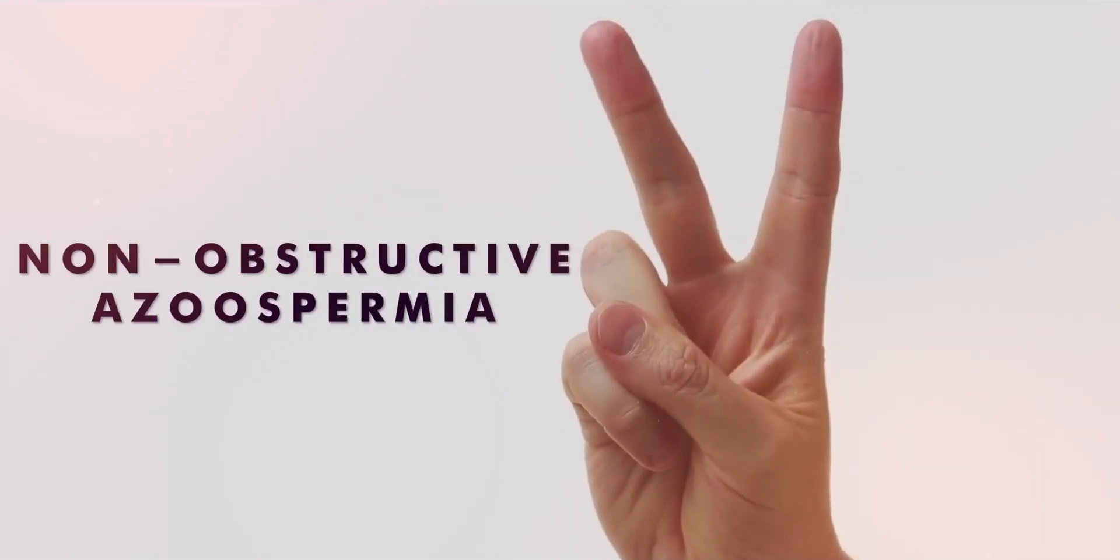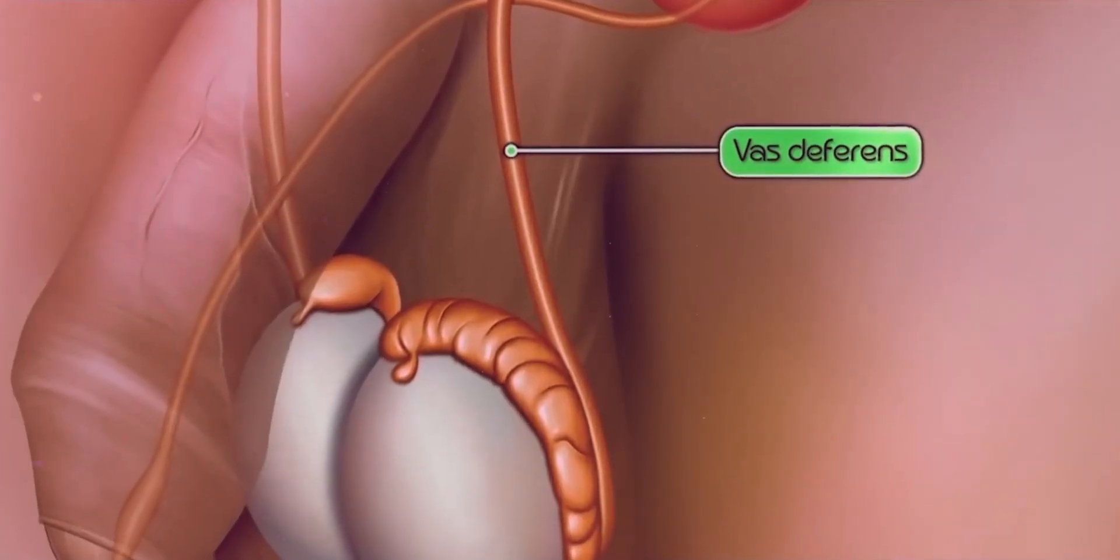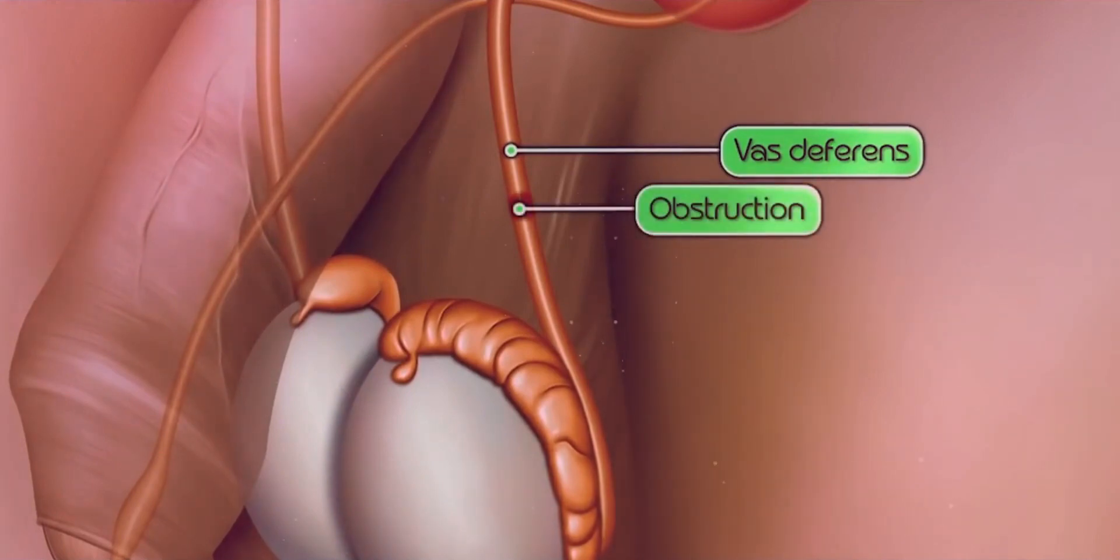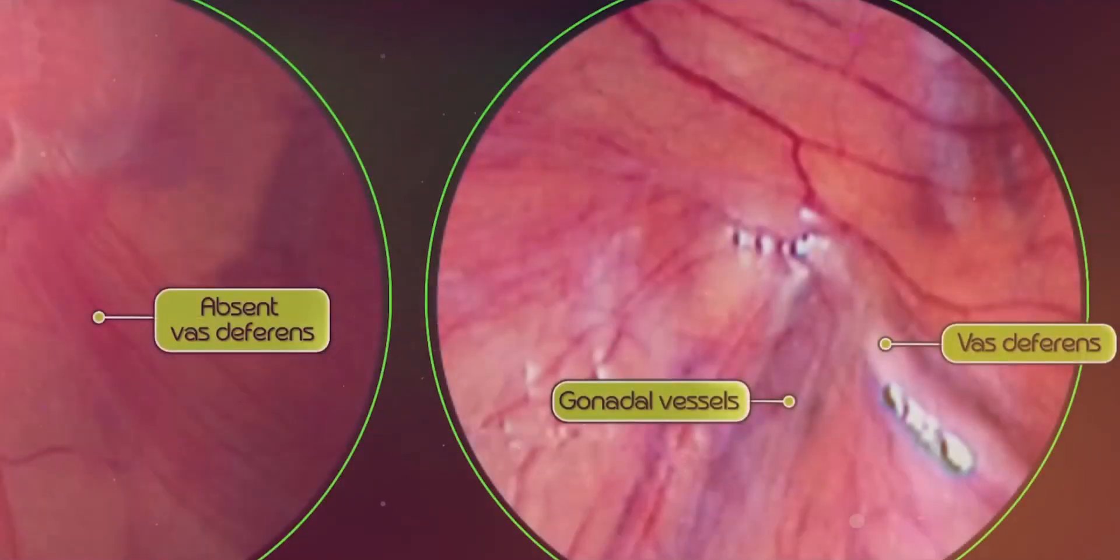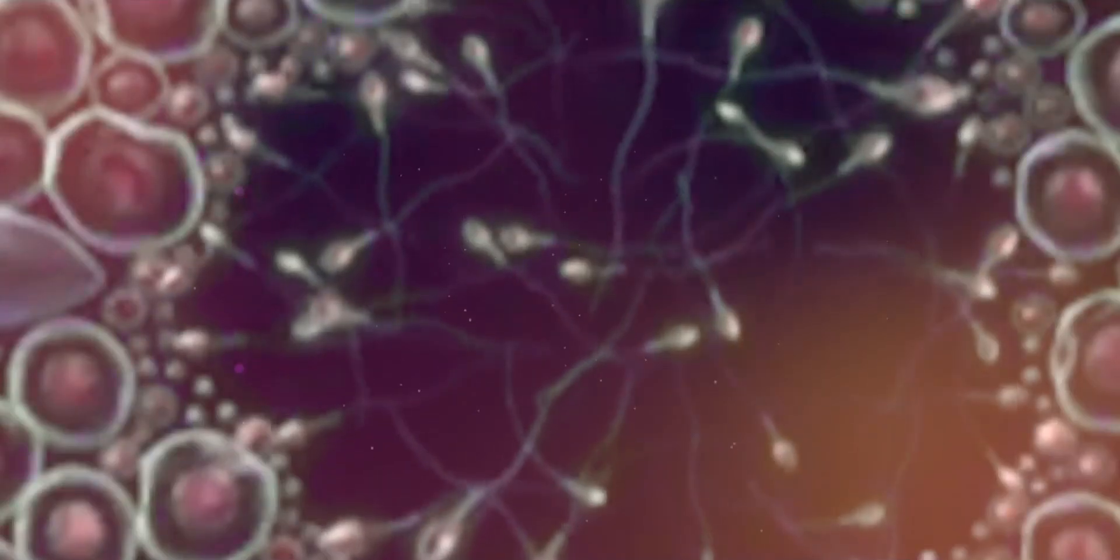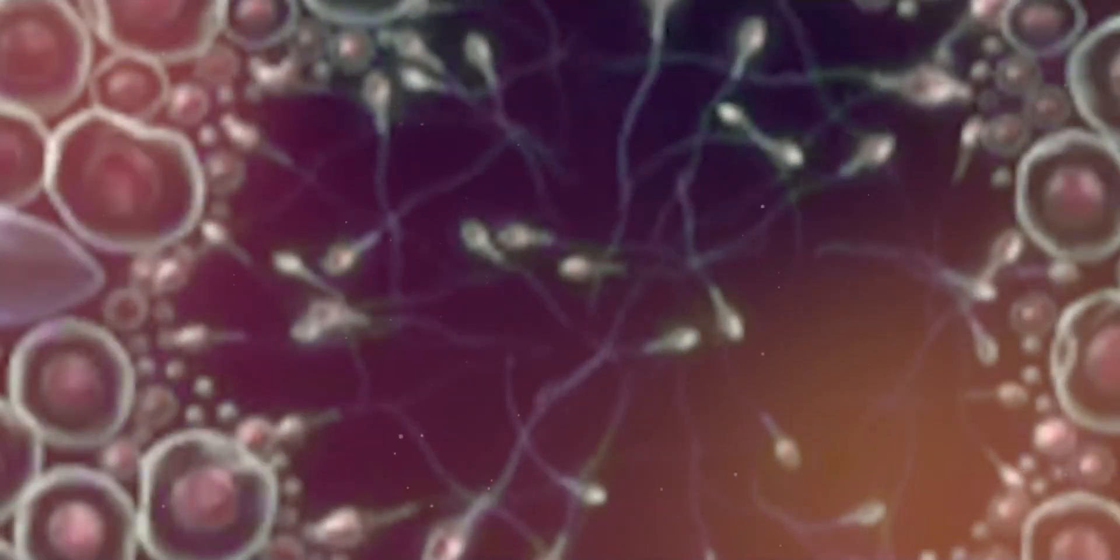Non-obstructive azuspermia. In obstructive azuspermia, there are some obstacles in the patient's reproductive system, such as the absence or blockage of the vas deferens tube, due to which the sperms are unable to move forward.